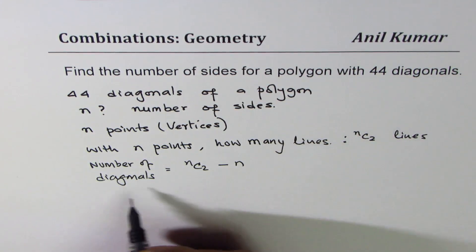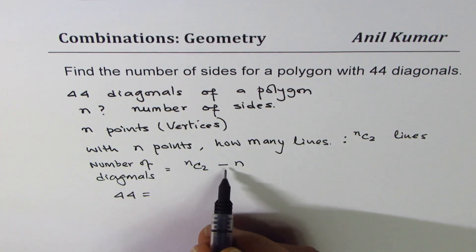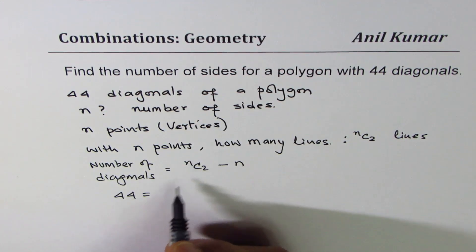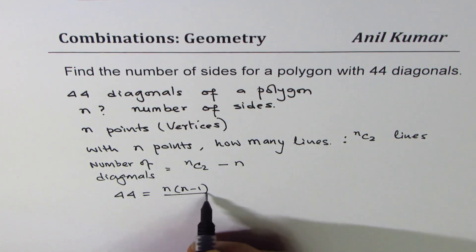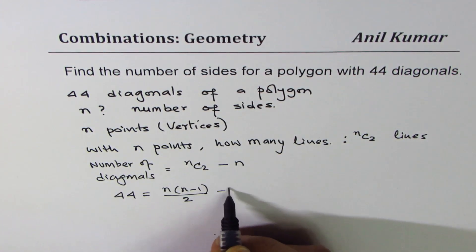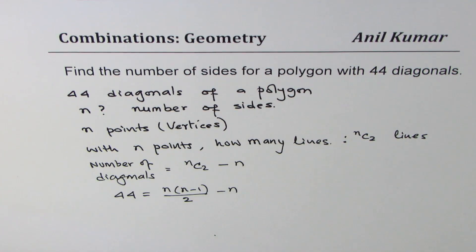So we could write this as 44 is equal to nC2 minus n, right? So nC2 means n times n minus 1 divided by 2 minus n. That is nC2, correct? n factorial divided by n minus 2 factorial divided by 2 factorial, that gives you this.